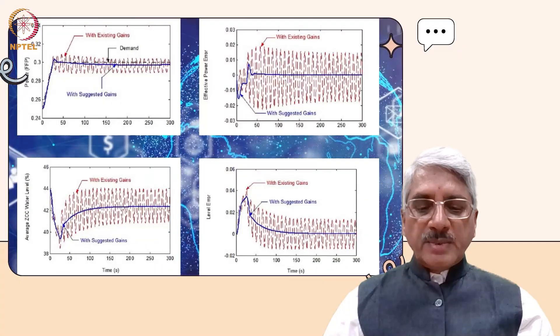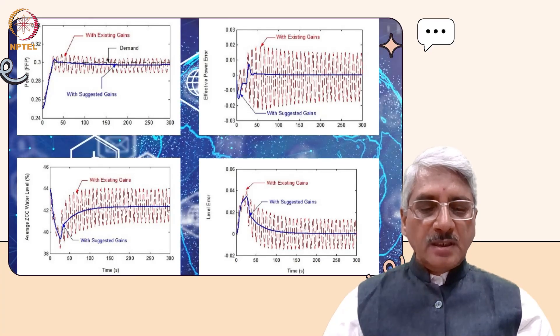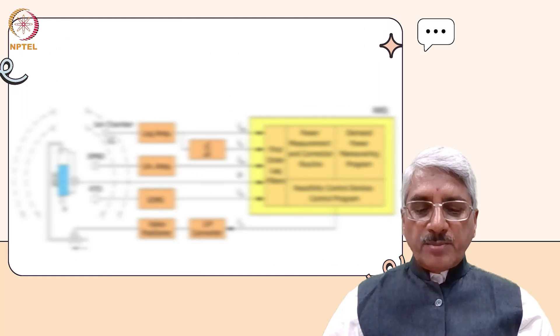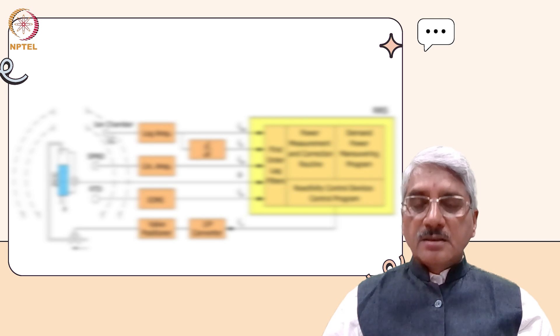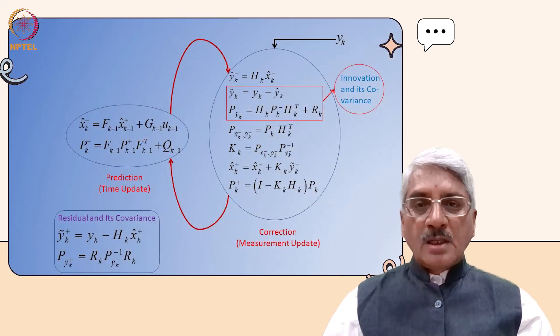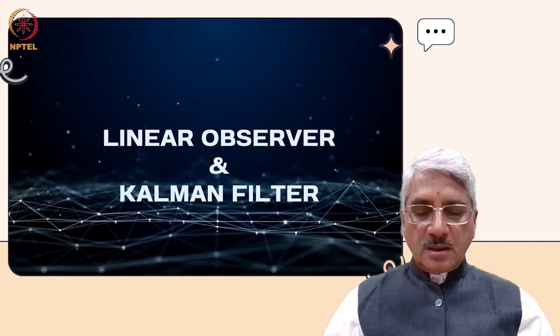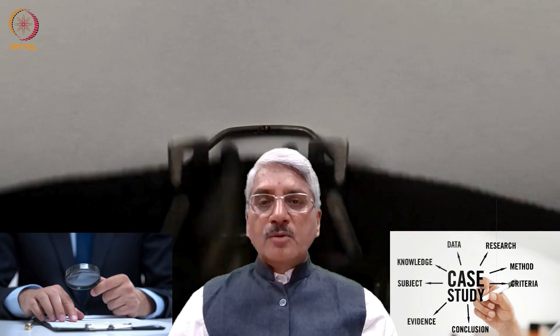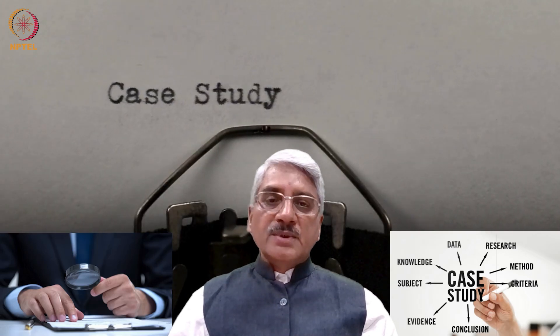The course covers the what and how of methods useful for assessing the time response of dynamical systems, and methods for designing control to achieve desired transient response characteristics besides stability. I will introduce linear observers and briefly the Kalman filter as well. Sufficient examples will be given to help you comprehend the application aspects, and there will be case studies towards the end of the course.